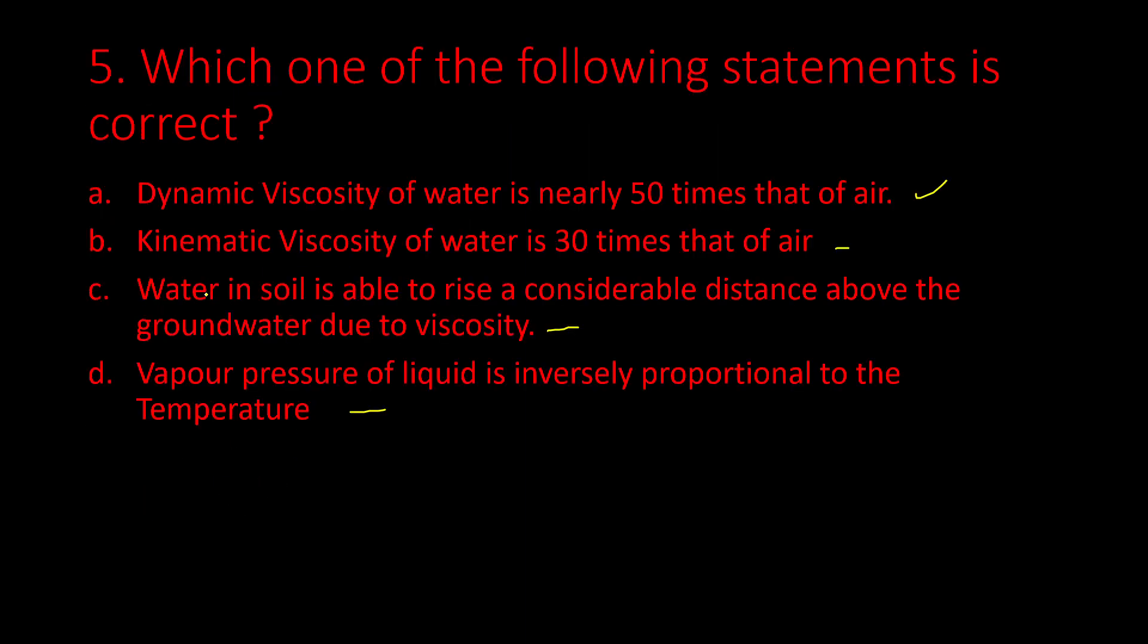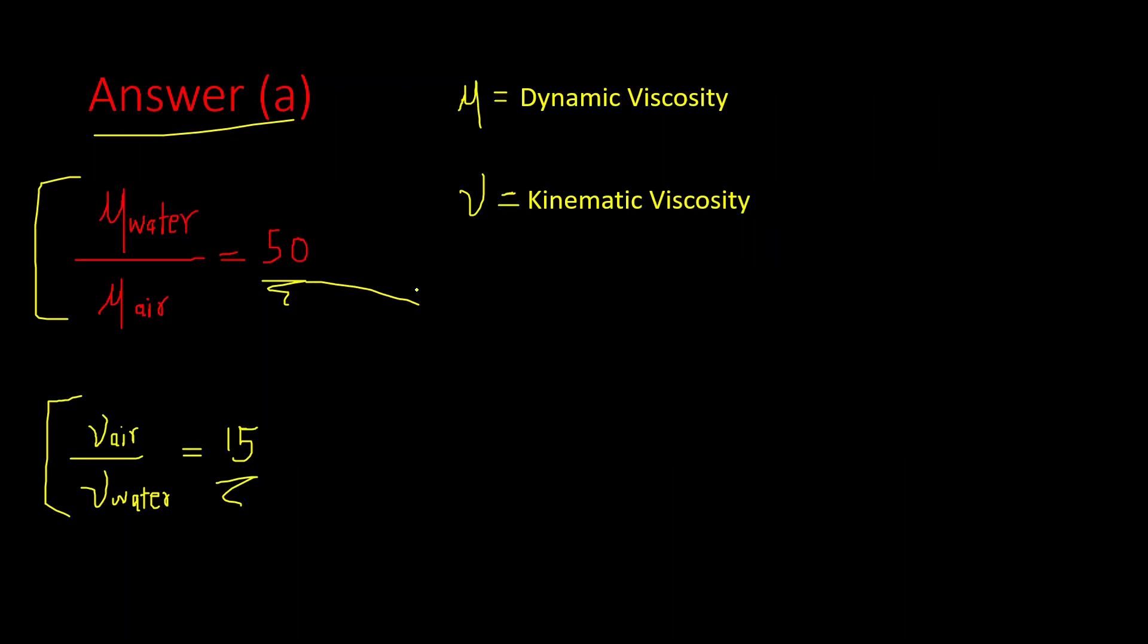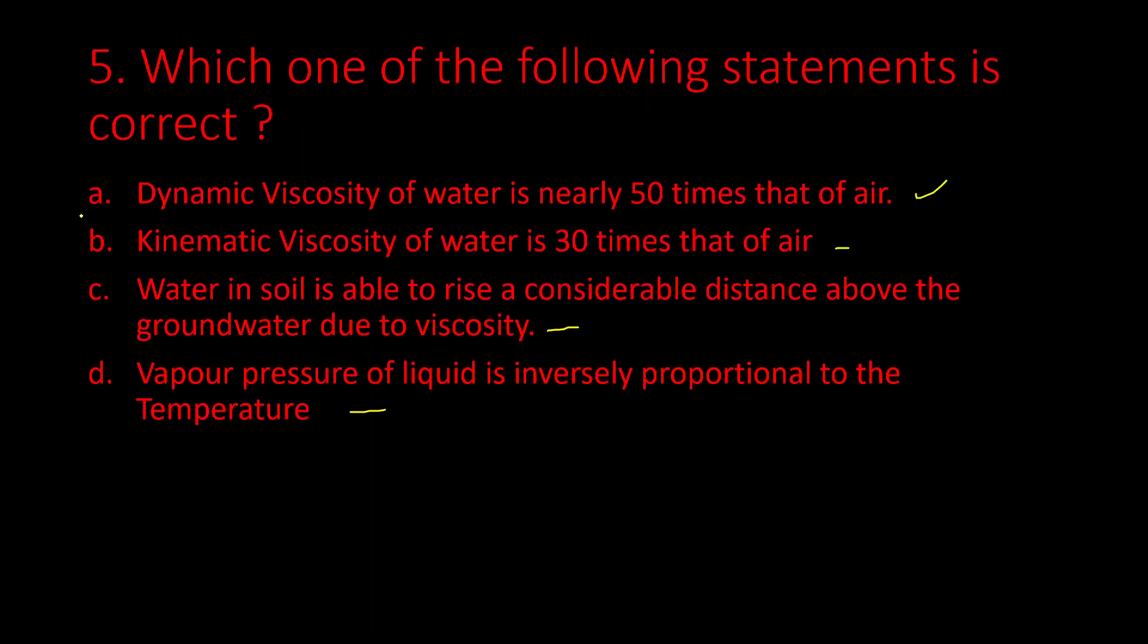So in our first option it says dynamic viscosity of water is 50 times that of air. Using this first relation we can write dynamic viscosity of water is equal to 50 times dynamic viscosity of air. So option A is correct.